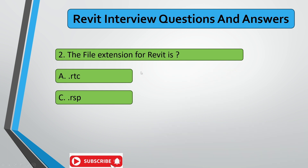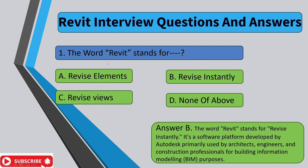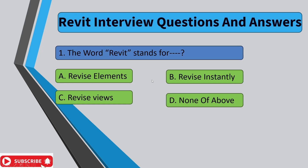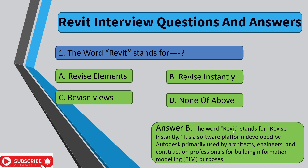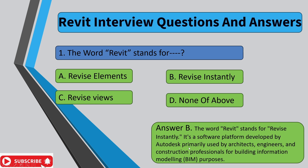The first question is: where does the word 'Revit' come from, and what does it stand for? The answer is 'Revit' stands for 'Revit instantly.' It is software developed by Autodesk, and it is primarily used by engineers, architects, and other construction professionals for building information modeling. The answer is B.